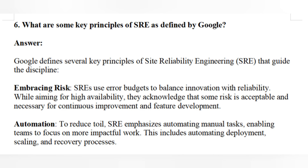Question six: what are some of the key principles of SRE as defined by Google? Google defines several key principles: First, embracing risk — SREs use error budgets to balance innovation with reliability. While aiming for high availability, they acknowledge that some risk is acceptable and necessary for continuous improvement. Second, automation to reduce toil — SRE emphasizes automating manual tasks, enabling teams to focus on more impactful work, including automating deployment, scaling, and recovery processes.